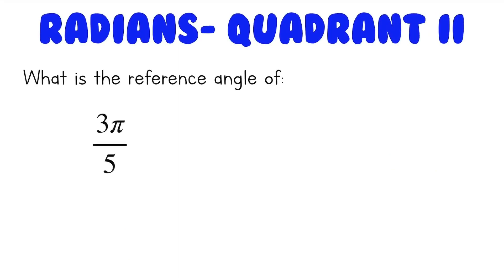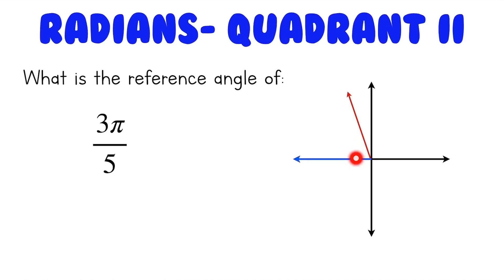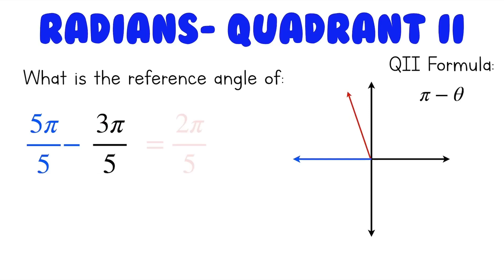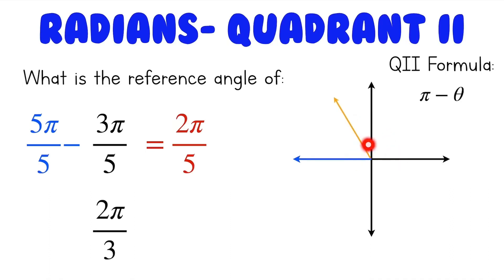What about an angle in radians in the second quadrant? What is the reference angle of 3 pi over 5? We'll be making a reference angle with the negative x-axis. To find it, we do pi minus the angle — pi is the same thing as 5 pi over 5, so 5 pi over 5 minus 3 pi over 5 gives us 2 pi over 5. What about 2 pi over 3? We do pi minus 2 pi over 3, and since pi is 3 pi over 3, we get 3 pi over 3 minus 2 pi over 3, which is pi over 3.